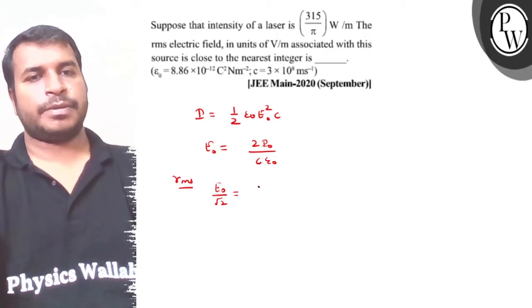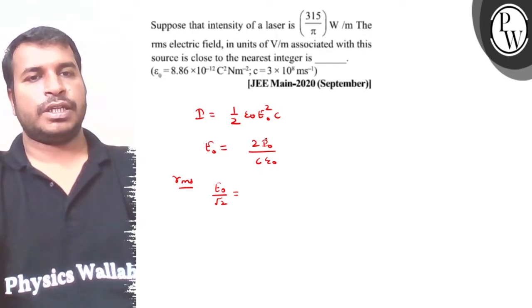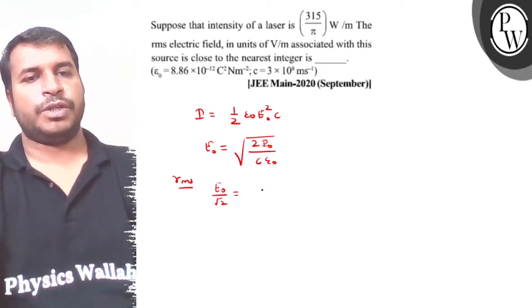So E naught by root 2 means here. E naught value, sorry, this is under root. So E naught value, here is under root of I naught.